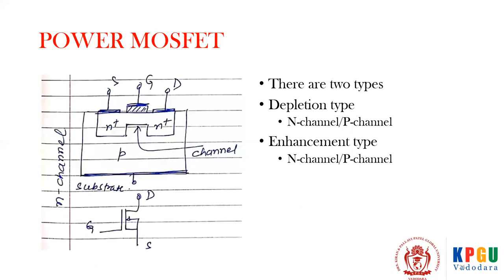There are two types of MOSFET: depletion type, which can again be n-channel or p-channel, and enhancement type, which is also n-channel or p-channel. Here we are going to discuss only the n-channel depletion type of MOSFET.